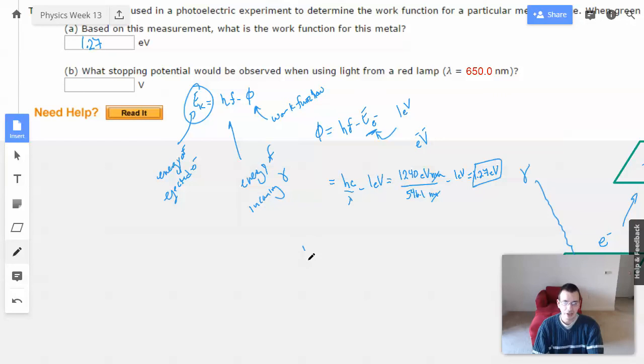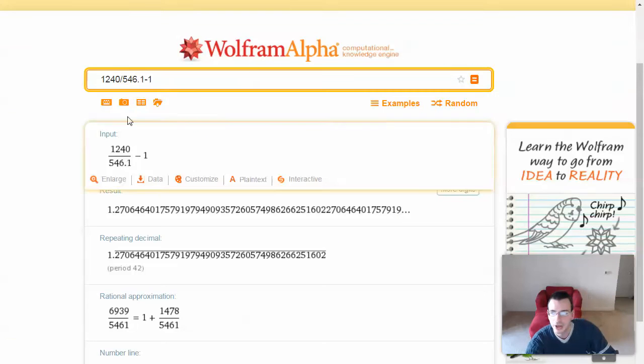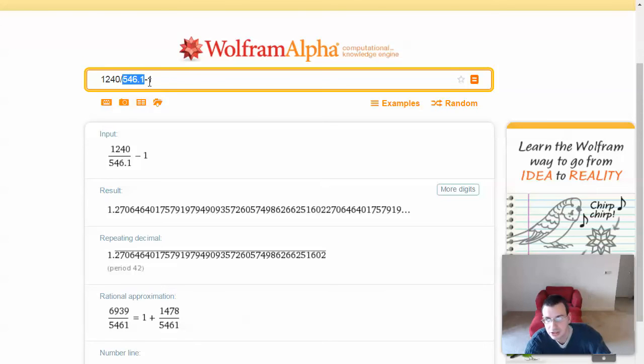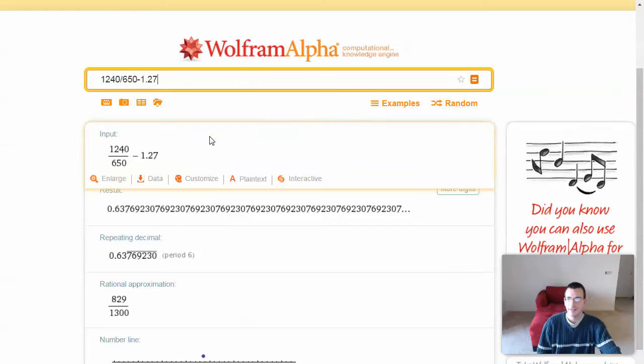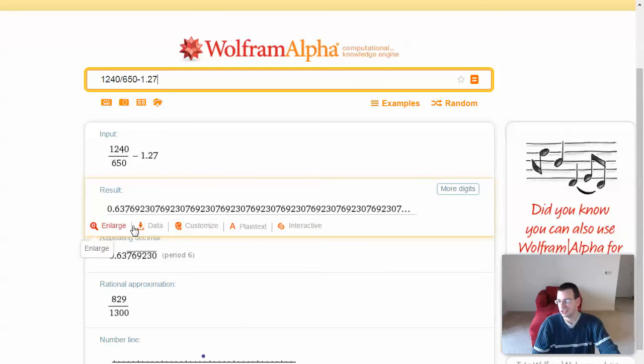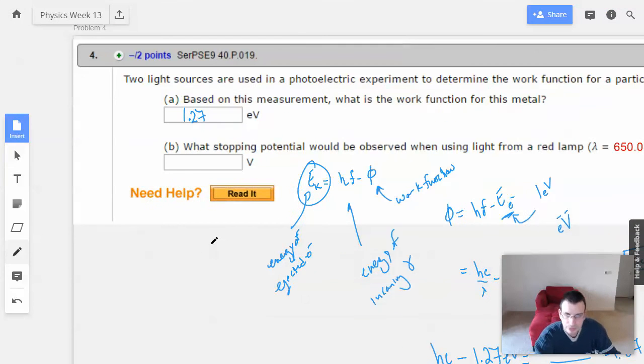So now we're going to have hc over lambda minus 1.27 electron volts. 1.27 is the work function that we already found, which equals 1240 electron volts nanometers over 650 nanometers. This is going to be almost 1. So we have 1240 divided by 650 minus 1.27. Make sure I got that right. 1240, 650, 1.27. Got it. And that gives us, which is almost like 2, 0.638. Equals 0.638 volts.